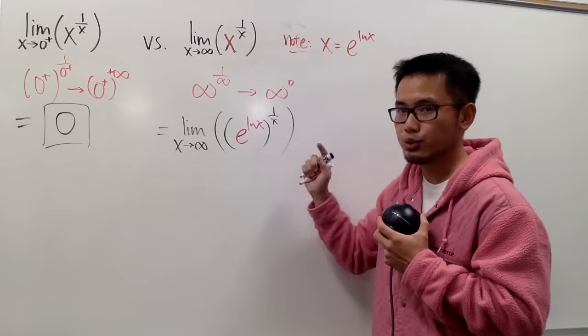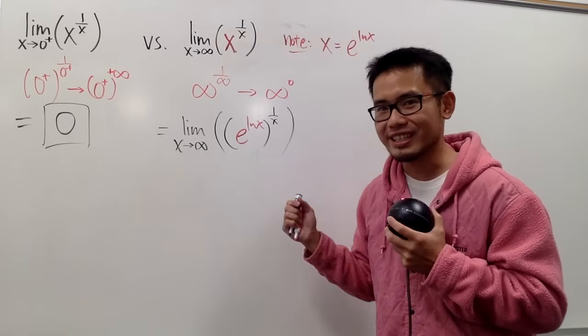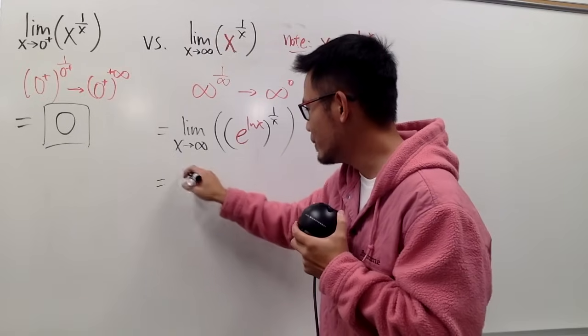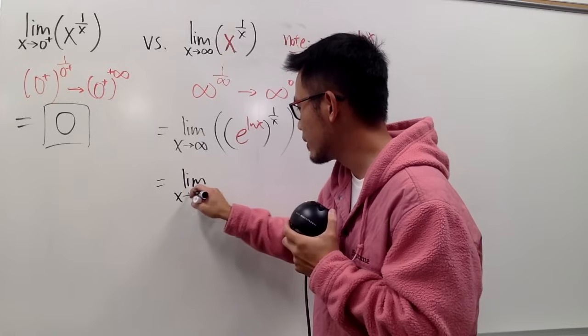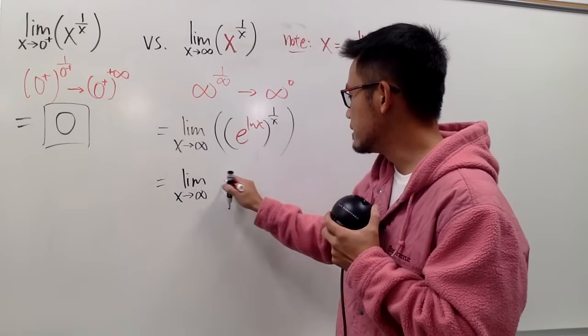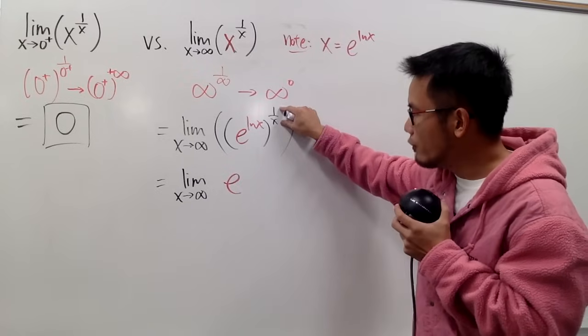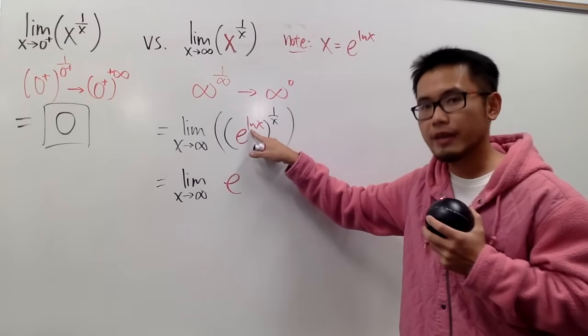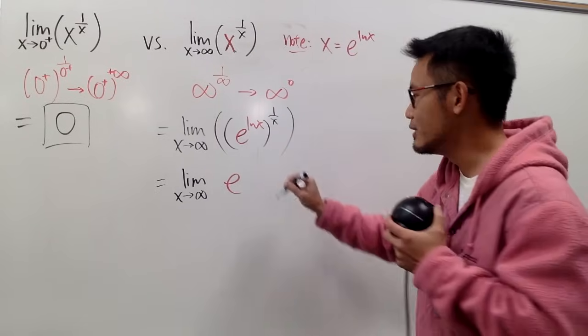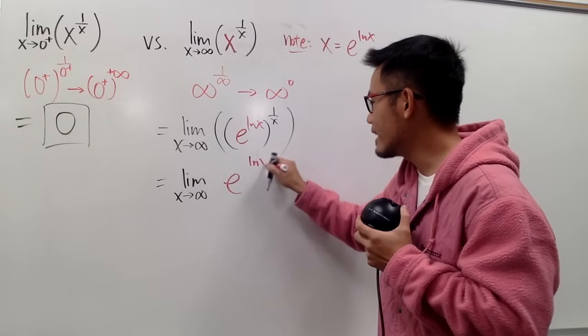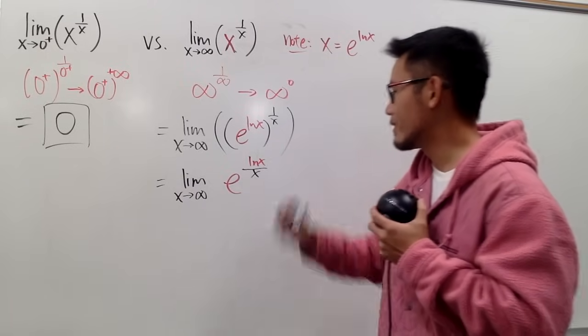And when we have a power to a power situation, we get to just multiply the powers together, isn't it? This is equal to the limit as x goes to infinity, base is still e, and then we can just look at this as 1 over x times ln x. And that's precisely just ln x over x, right?